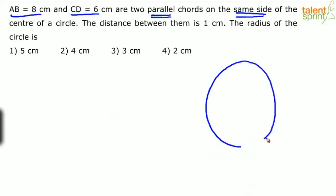So let's consider a circle first. Here's the center, let's say O. Now there are two chords AB and CD. AB is 8 centimeter and CD is 6 centimeters. Let's say this is the first chord AB and here's the second chord CD. These two are parallel.